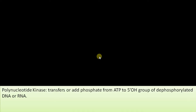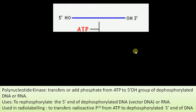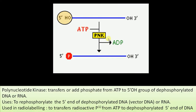Polynucleotide kinase is the enzyme opposite to alkaline phosphatase — it adds phosphate from ATP to the 5' OH group of dephosphorylated DNA or RNA, used for rephosphorylation and radio-labeling. In radio-labeling, it transfers radioactive P32 from ATP to the dephosphorylated 5' end of DNA or RNA. The phosphate in ATP is transferred and ADP is released as phosphate is added to the 5' end.